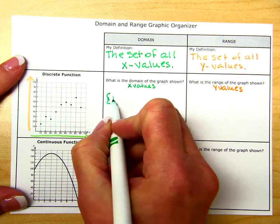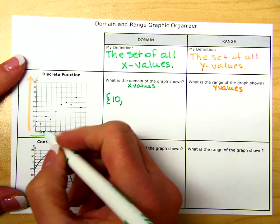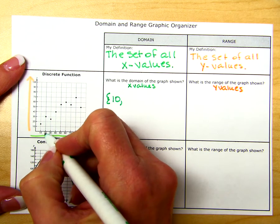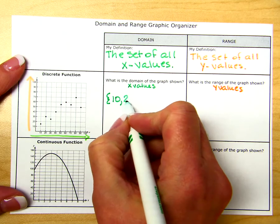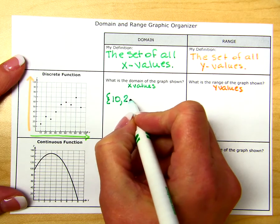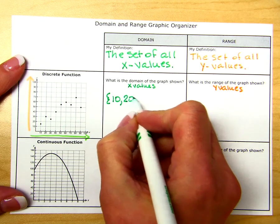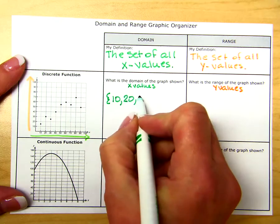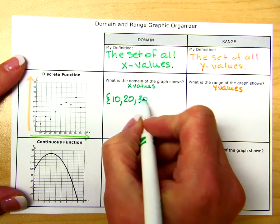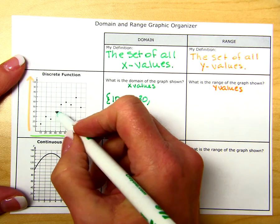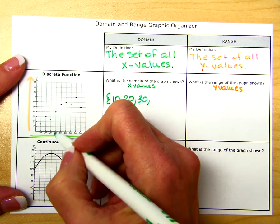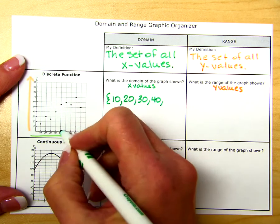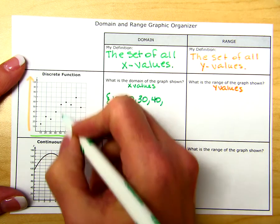So I will have a 10. This next one has an x value of 20. The next point has an x value of 30. The next point has an x value of 40. Then we have 50.